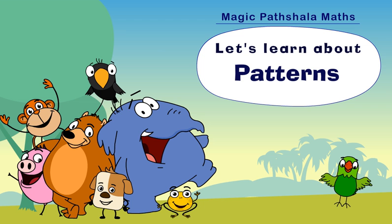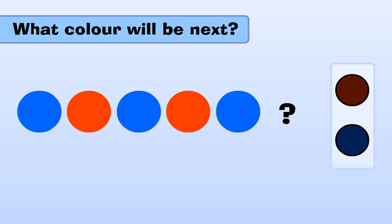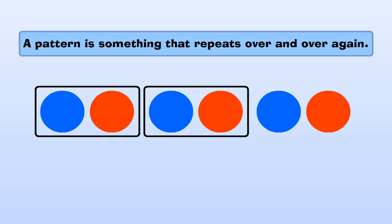Let's learn about patterns. Blue, red, blue, red, blue. What will come next? That's right, red. A pattern is something that repeats over and over again.